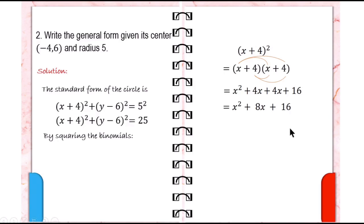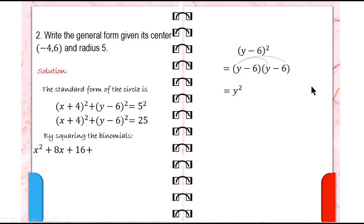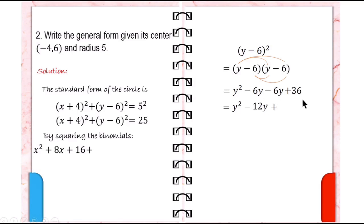So we have x squared plus 8x plus 16. Now expand y minus 6 raised to 2, which equals y minus 6 times y minus 6. So y times y is y squared, y times negative 6 is negative 6y, negative 6 times y is negative 6y, and negative 6 times negative 6 is positive 36. We combine negative 6y and negative 6y, giving us negative 12y plus 36.